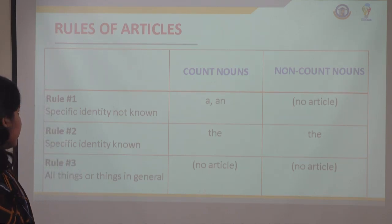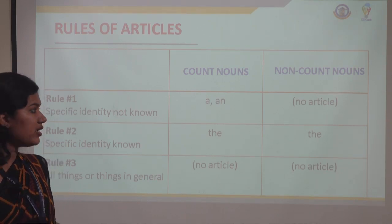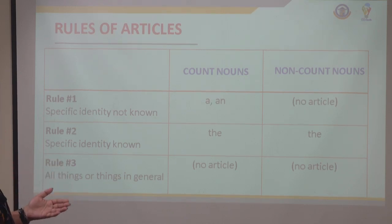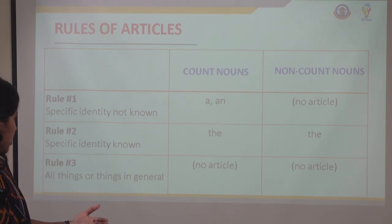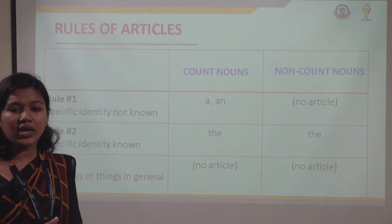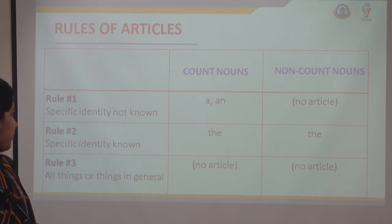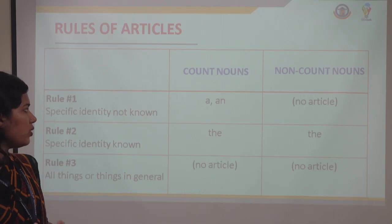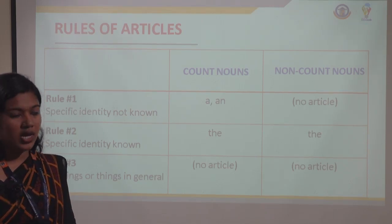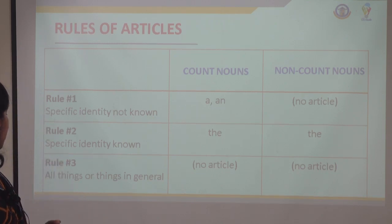There are certain rules for using articles in English. Rule number one: if you are talking about a count noun and the specific identity is not known, you can use 'a' or 'an'. If you are talking about a non-count noun and the specific identity is not known, you should not use any article.